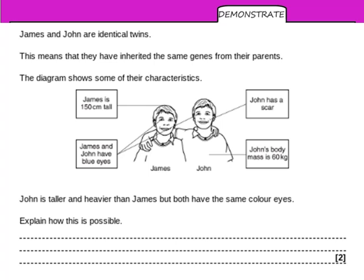Here is the first exam question — worth two marks, so make two points. James and John are identical twins, meaning they inherited the same genes from their parents. James is 150 cm tall; John has a scar; both have blue eyes; John's body mass is 60 kg. As shown, John is taller and heavier than James, but they both have the same eye color. Explain how this is possible.